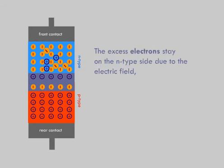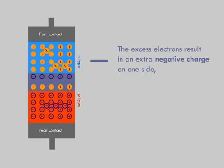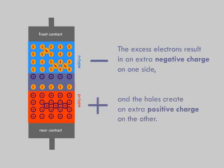The excess electrons stay on the N-type side due to the electric field, while the holes are swept over to the P-side by the electric field. The excess electrons result in an extra-negative charge on one side, and the holes create the extra-positive charge on the other side.